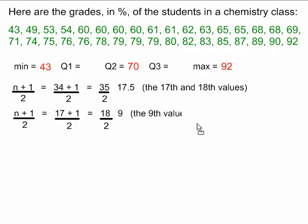So, the 9th value will be our Q1. The 9th value, if I count from the bottom, is 1, 2, 3, 4, 5, 6, 7, 8, 9. It's this first of the 61's. So our Q1 is 61.